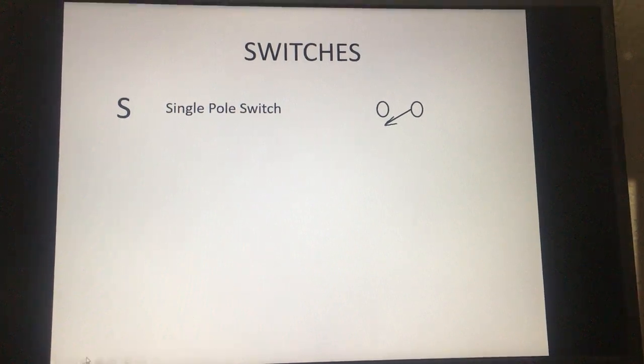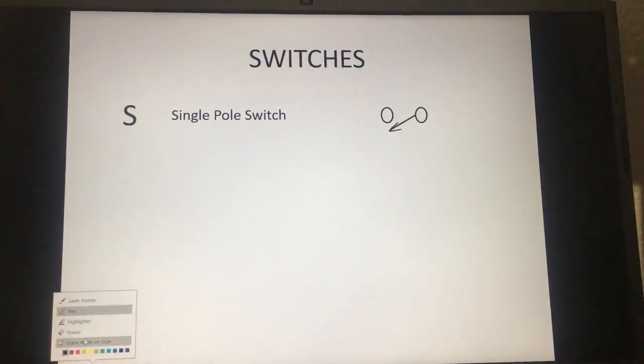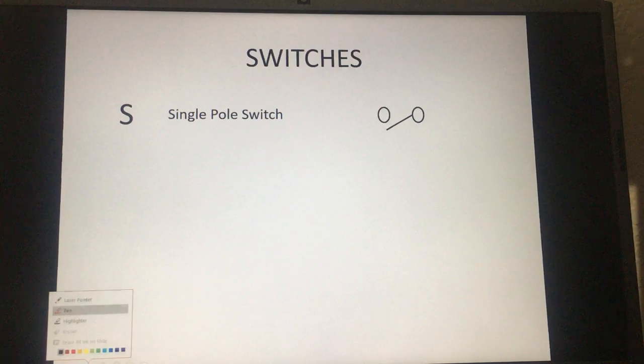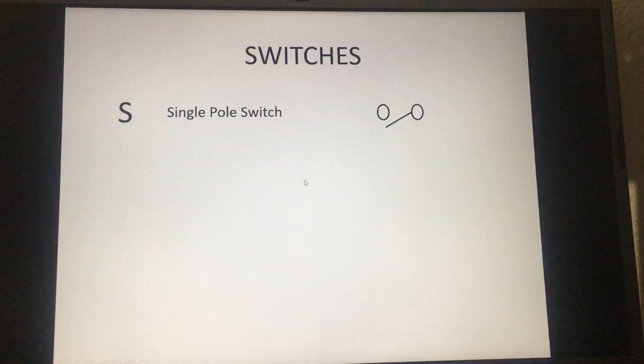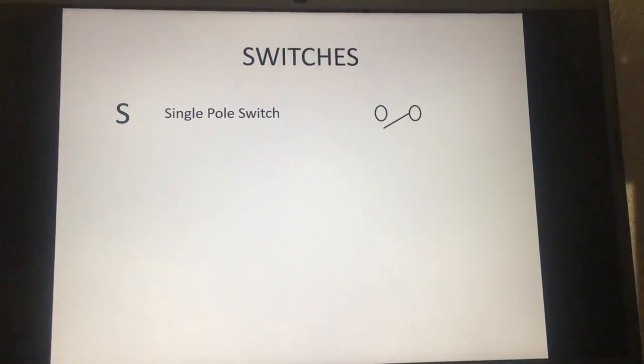Generally we don't draw it with the arrow, in fact we don't at all, but for some reason they did on that. So a single pole switch is just a normal switch in your house where you turn on the light and you turn off the light.